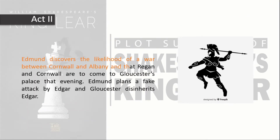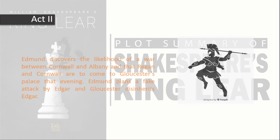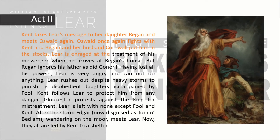Act 2: Edmund discovers the likelihood of a war between Cornwall and Albany, and that Regan and Cornwall are to come to Gloucester's palace that evening. Edmund plans a fake attack by Edgar and Gloucester disinherits Edgar. Kent takes Lear's message to his daughter Regan and meets Oswald again. Oswald fights with Kent, and Regan and her husband Cornwall put Kent in the stocks. Lear is enraged at the treatment of his messenger when he arrives at Regan's house, but Regan ignores her father as did Goneril.